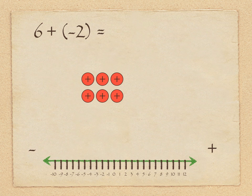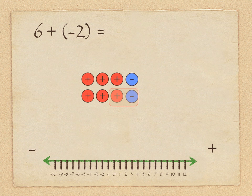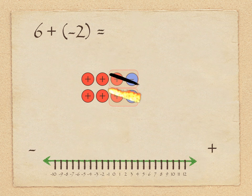This time we're looking at 6 plus negative 2. We have the six positive counters on the screen, and we're going to add in two negative counters. So we have a mix — six positives and two negatives. We can't answer the question yet because we have two different colors. We have to make it so we have either all positives or all negatives. So what we can do is start grouping them — a positive with a negative — and when we do that, we essentially neutralize. The positive and negative cancel each other out and make what we call a zero. So what we're left with is positive 4.